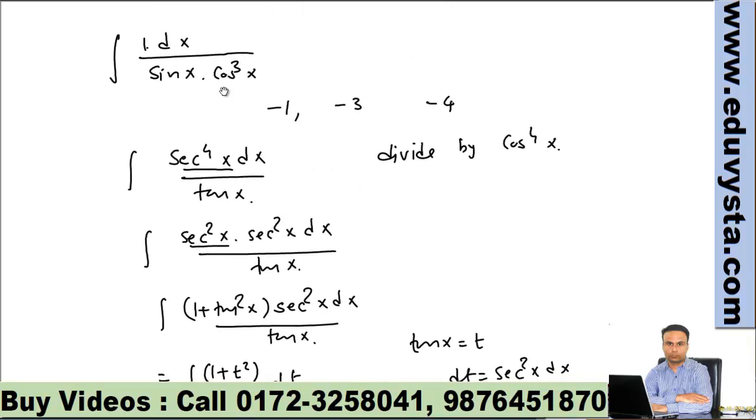Let's take one more example in which we have this situation, that is, sum of powers of sine x and cos x is negative even integer.